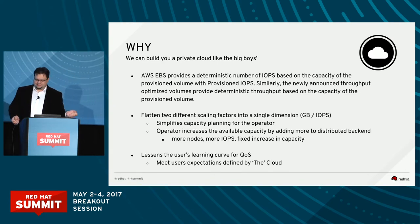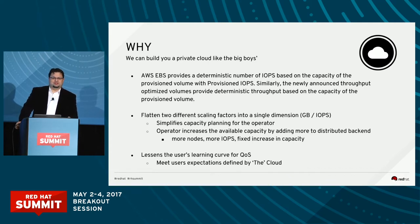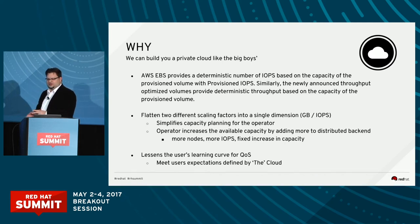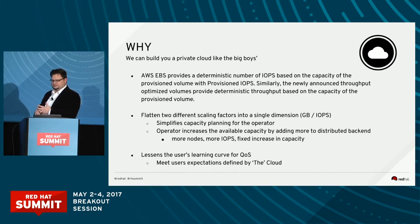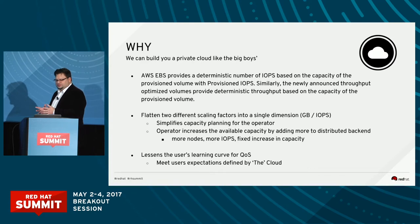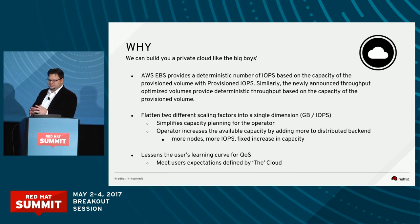So why do we care? Because this is how public cloud vendors do quality of service — simple, effective, and understood by users. The admin scales in a single dimension: more gigabytes, more IOPS — it's just 'more.' Two different scaling factors are flattened into a single dimension. The operator needs to add capacity to add IOPS anyway, so it might as well give users the benefit of both storage and IOPS. Users are coming to private clouds expecting the same QoS format they are used to from the public cloud. OpenStack Cinder will be able to set QoS limits based on provisioned capacity — and let my colleagues show you how we are making this possible.